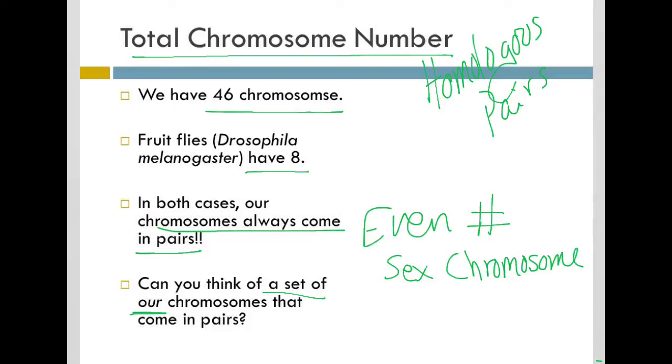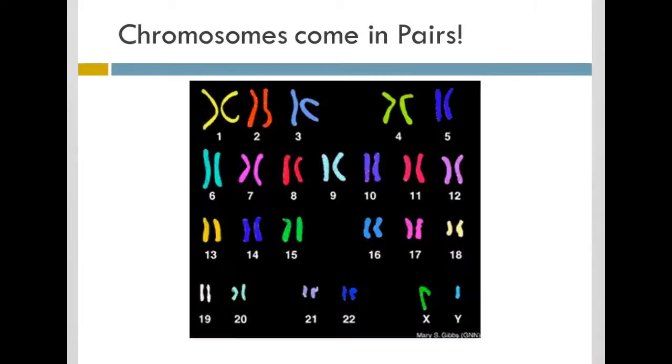The sex chromosomes, I mean, you think about boys have XY and girls have XX or something like that. The chromosomes that determine what sex you are come in a pair. So when I think about that, I think about sex chromosomes. They always come in pairs.